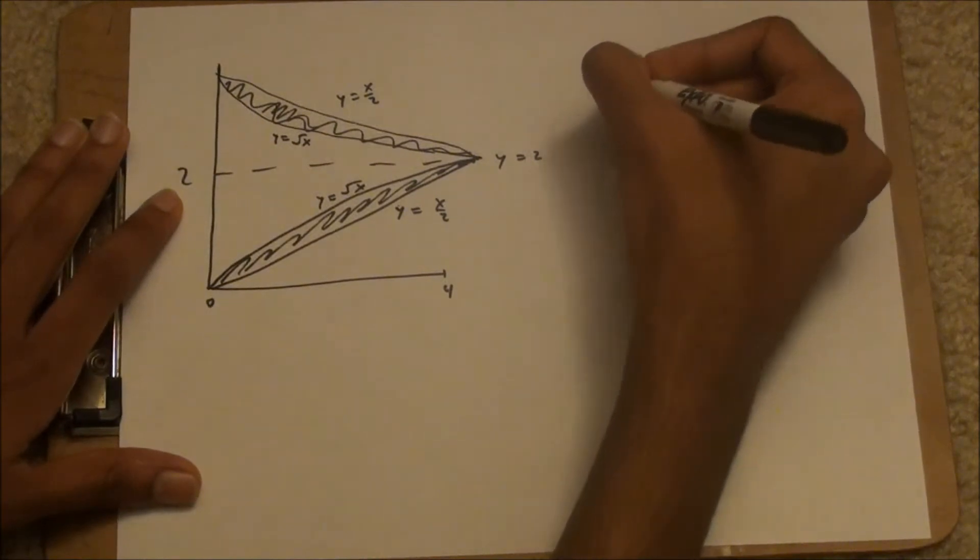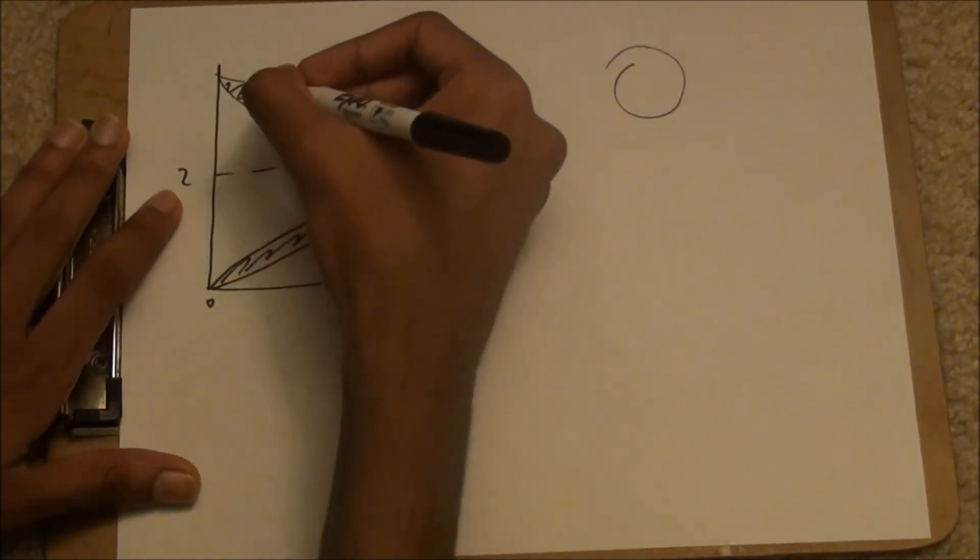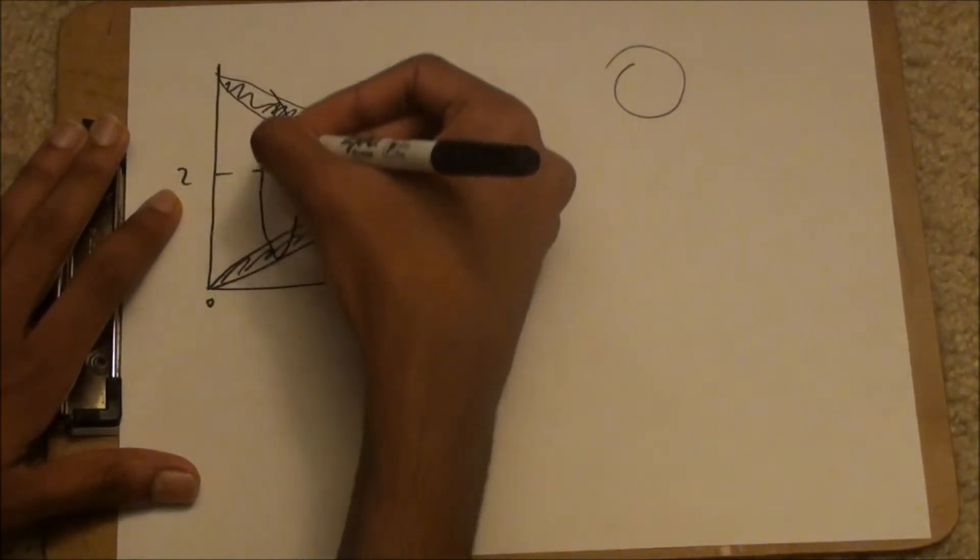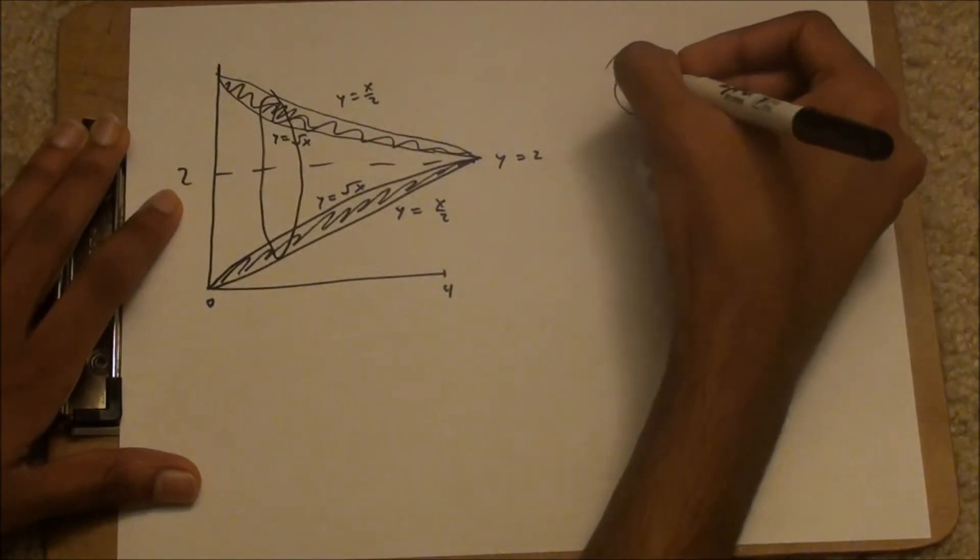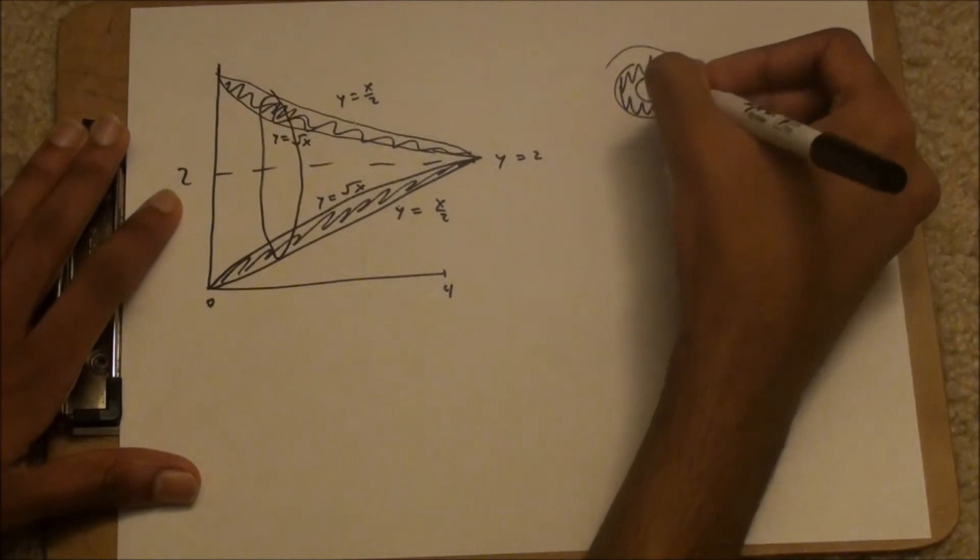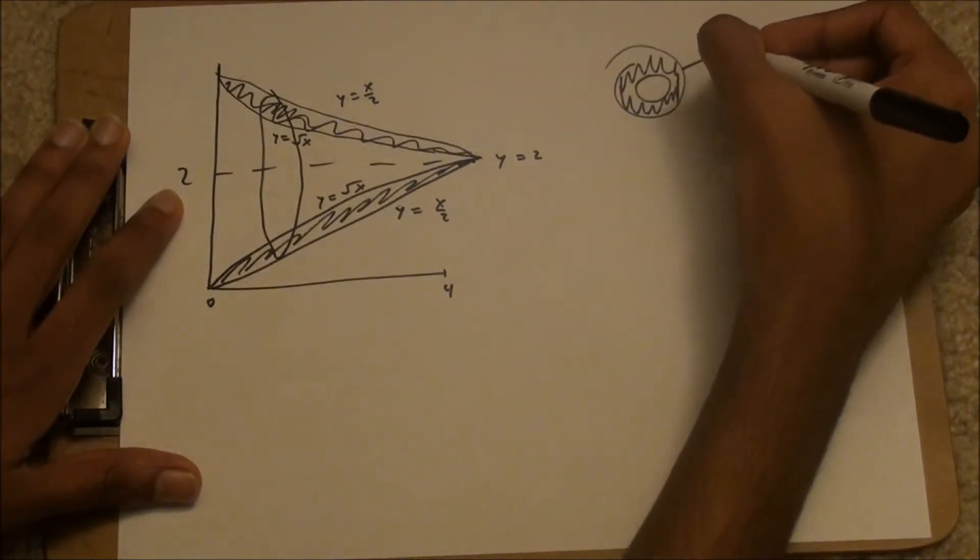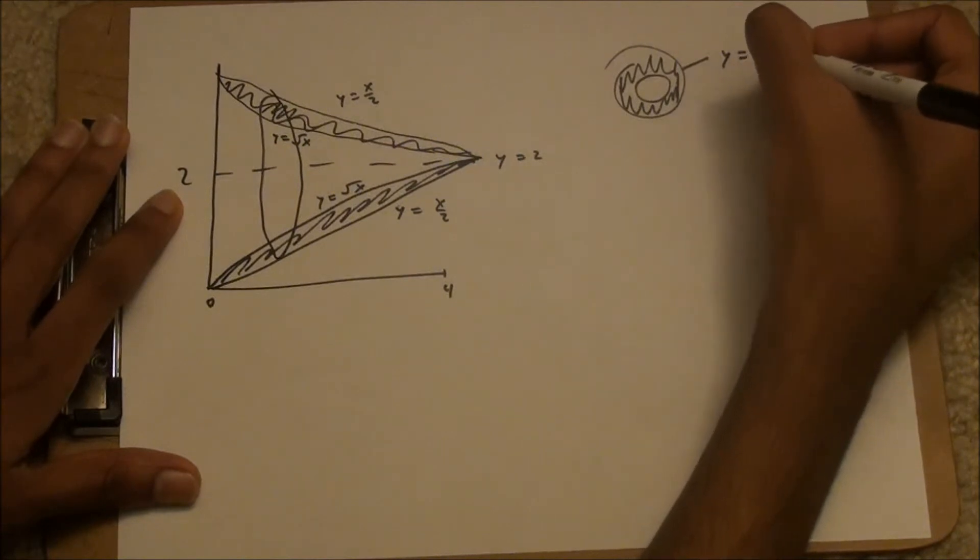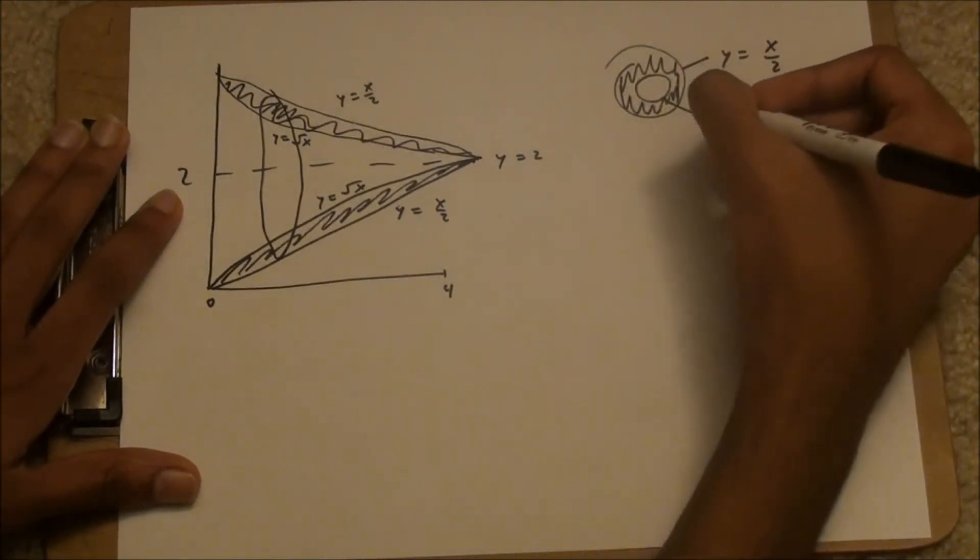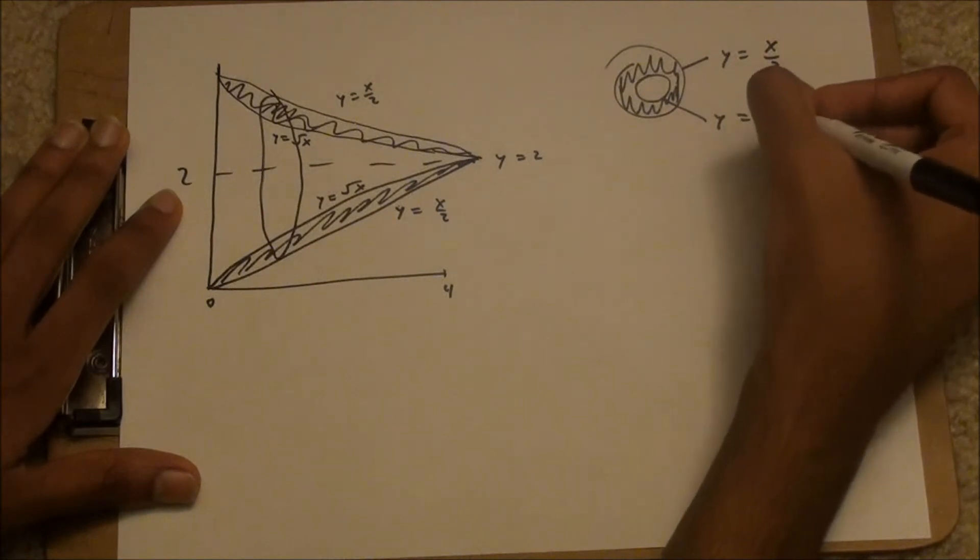And this is obviously going to be a washer problem. Take the cross-section of that, and that's the bolder part. The outside of this is the function y equals x over 2, and the inner part of this is y equals root of x.